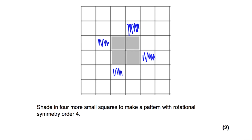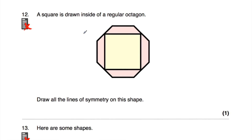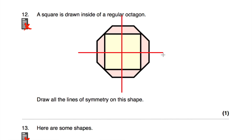Question number 12: we've got a square inside a regular octagon. We've been asked to draw all the lines of symmetry on the shape. The four lines of symmetry are: the vertical one, the horizontal one, and two diagonal ones. Because of the square inside the octagon, we can't have more lines of symmetry — so there are just four lines of symmetry.